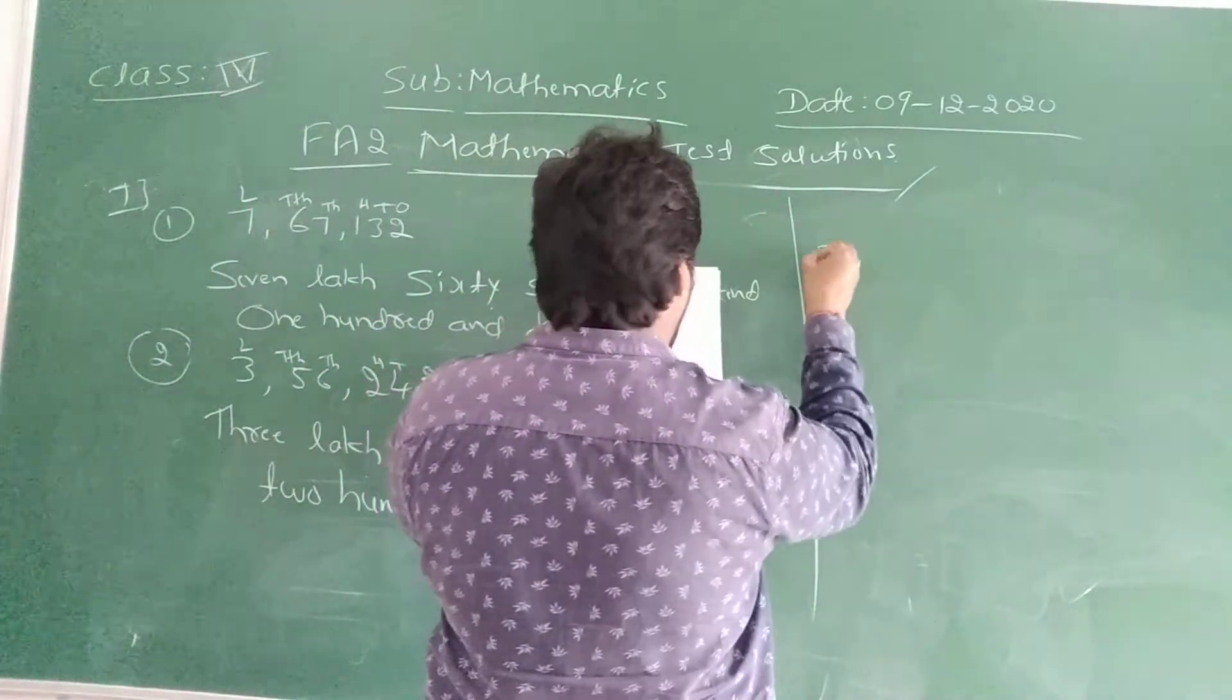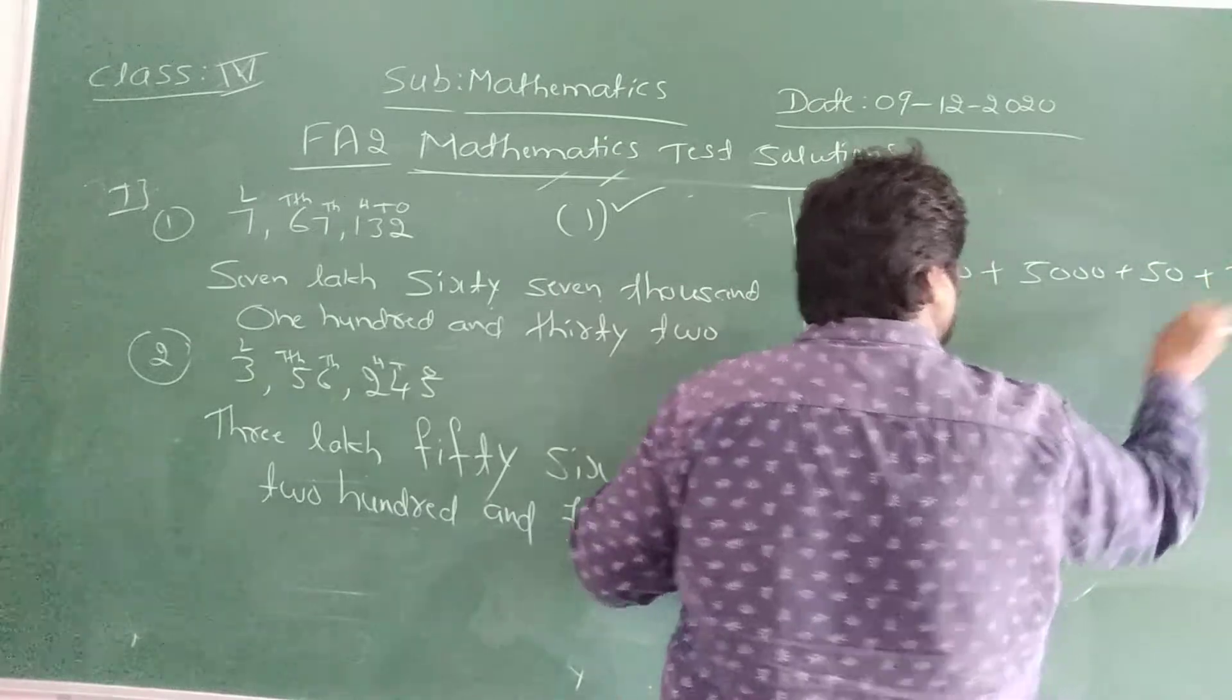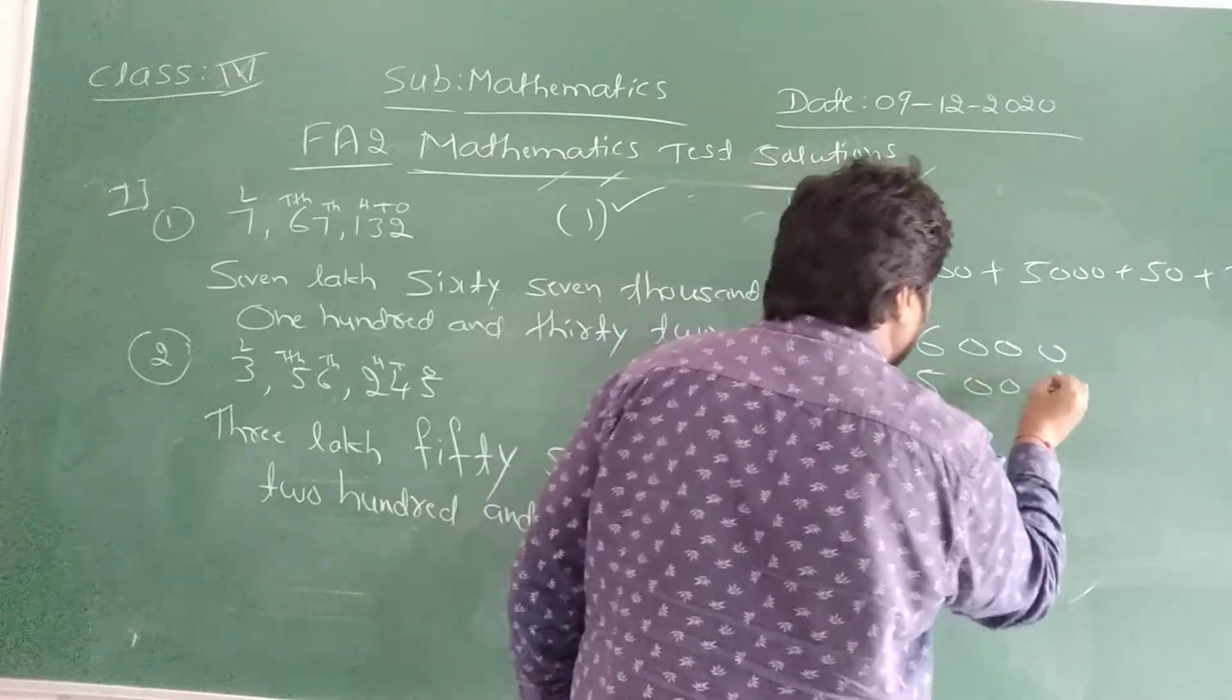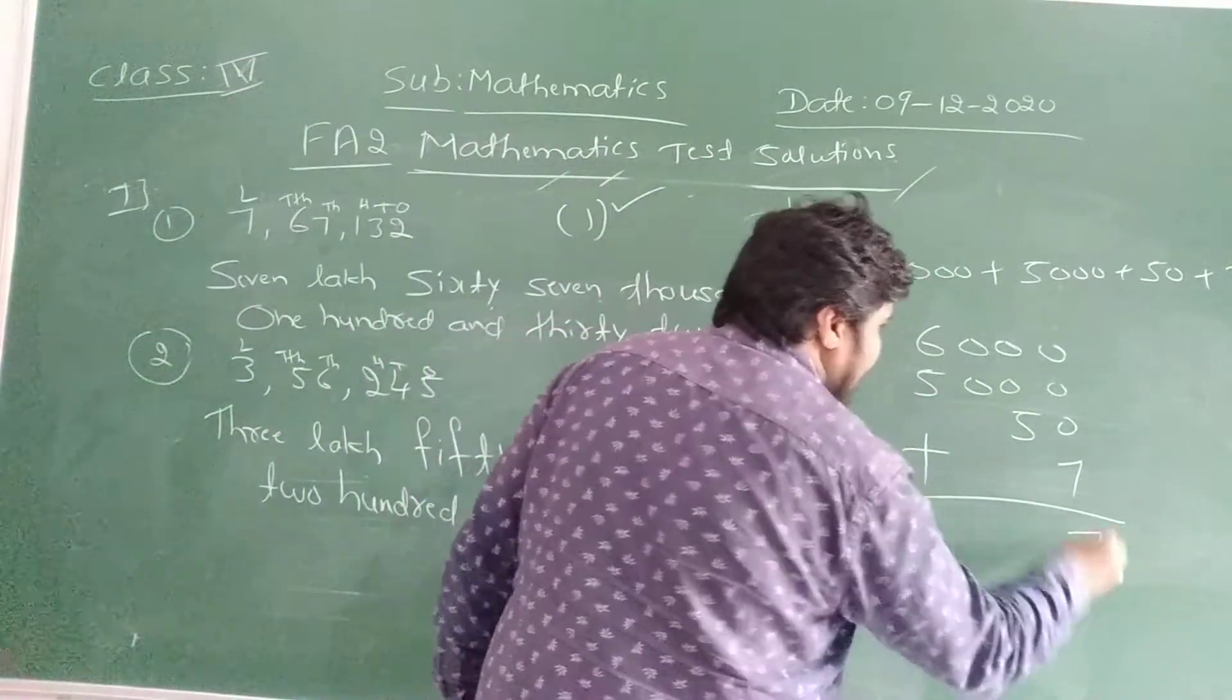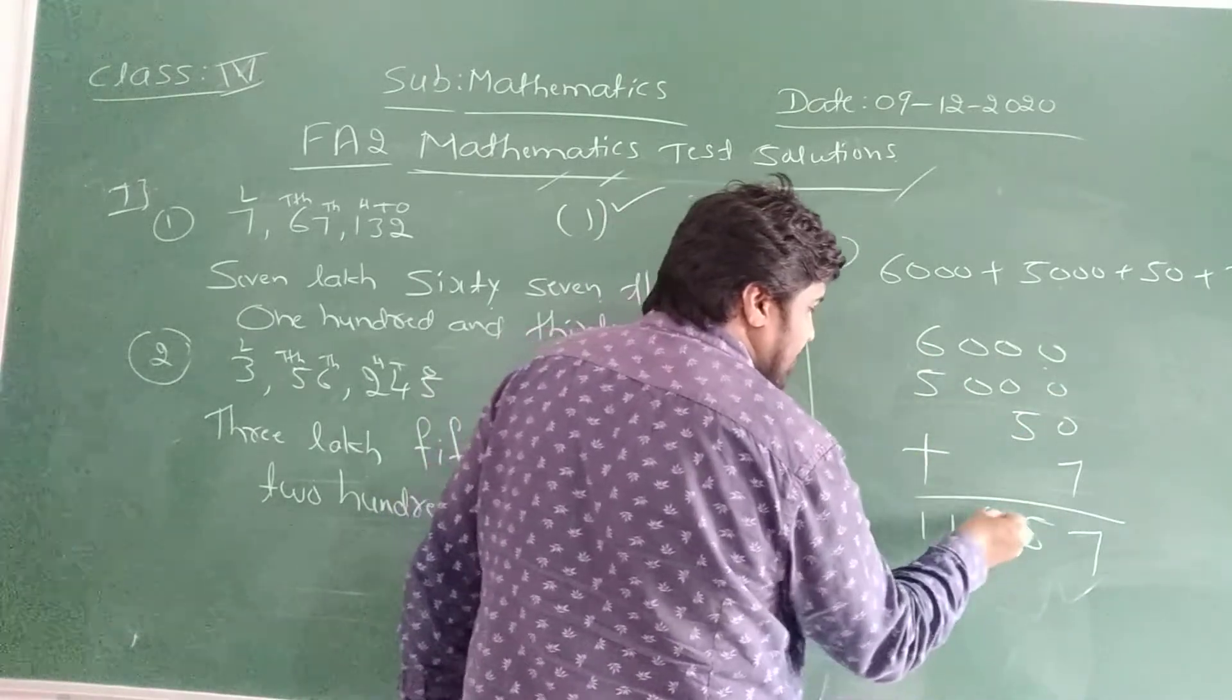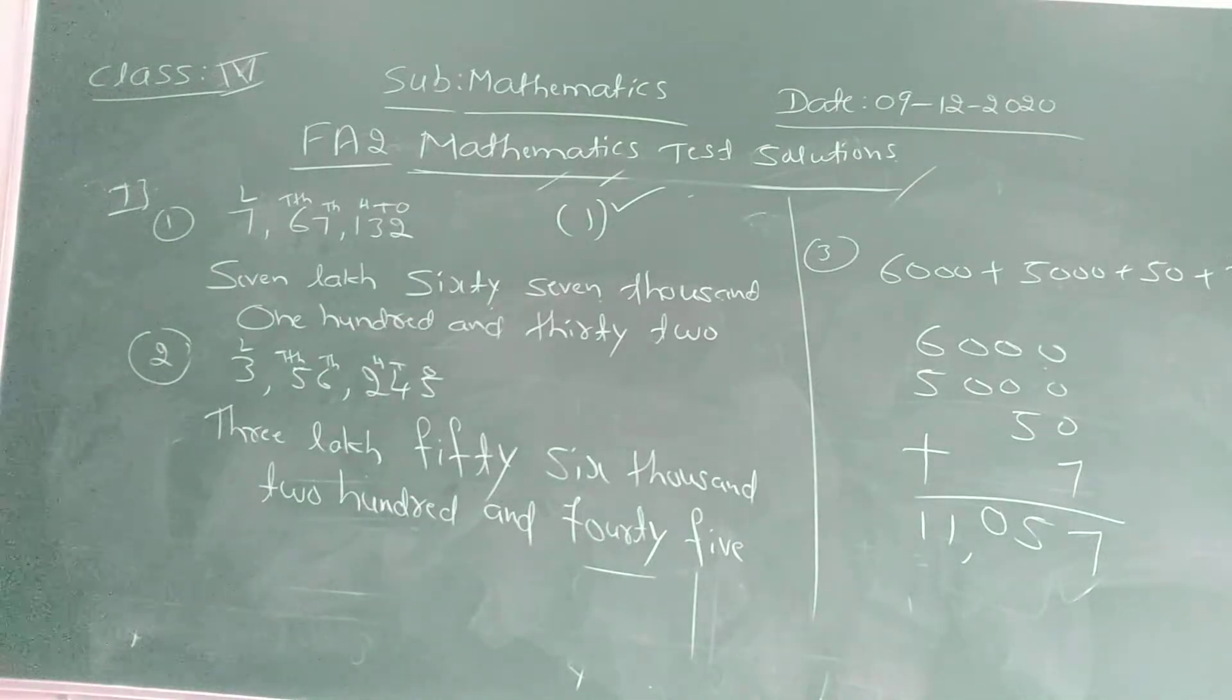Next question number 3, write in standard form. 6000 plus 500 plus 50 plus 7. See, I am going to write 6000, next 500, 6000 plus 500, next 50 plus 7. All these things, 6500, 11,057. Answer is 11,057. Is it clear children? Yes.